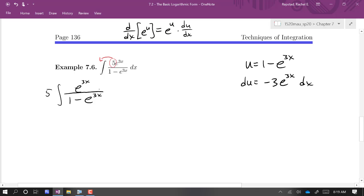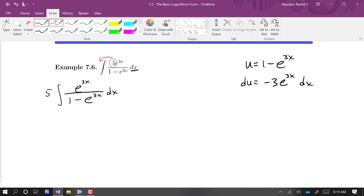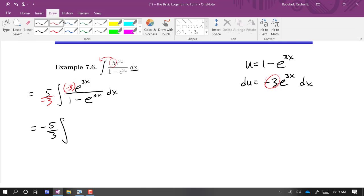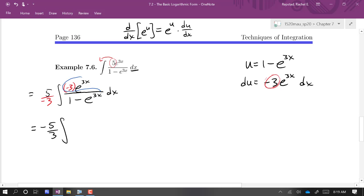So it looks like I have du up here. I've got that factor of e to the 3x. I'm just off by this factor of negative 3. So I'm going to put that in and compensate outside thusly. So I have negative 5 thirds integral. Now what I have is du. This part here, that's du. And of course, we've got u in the bottom. This does fit the log form.